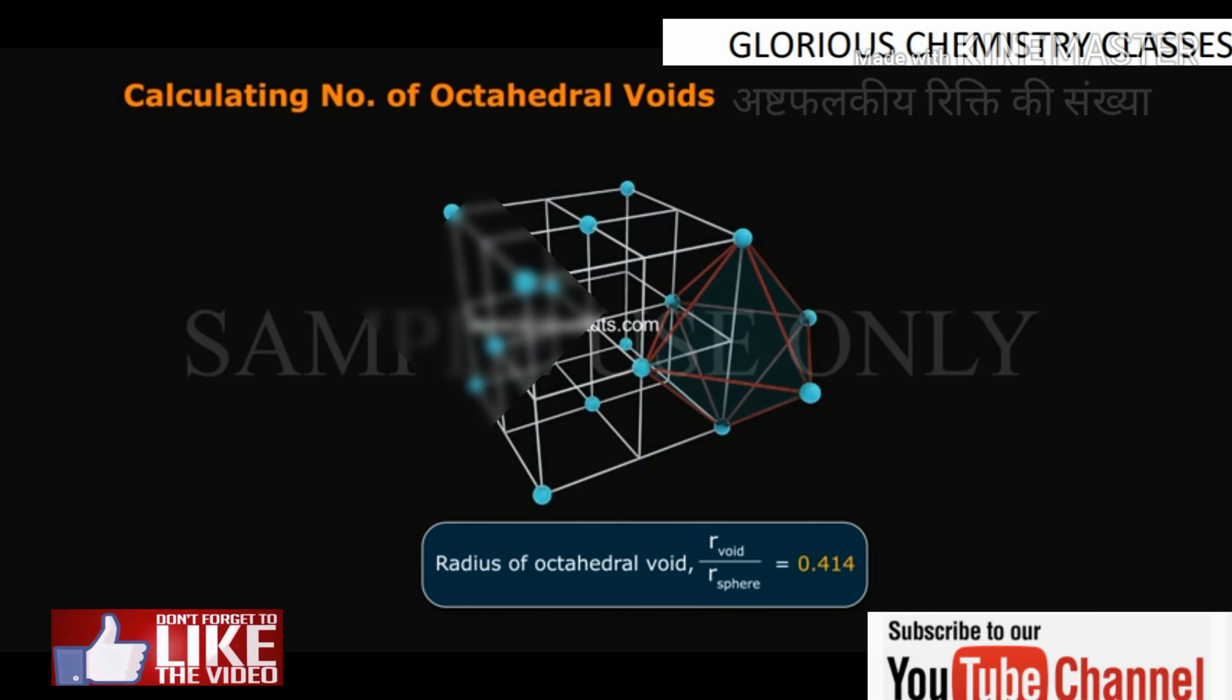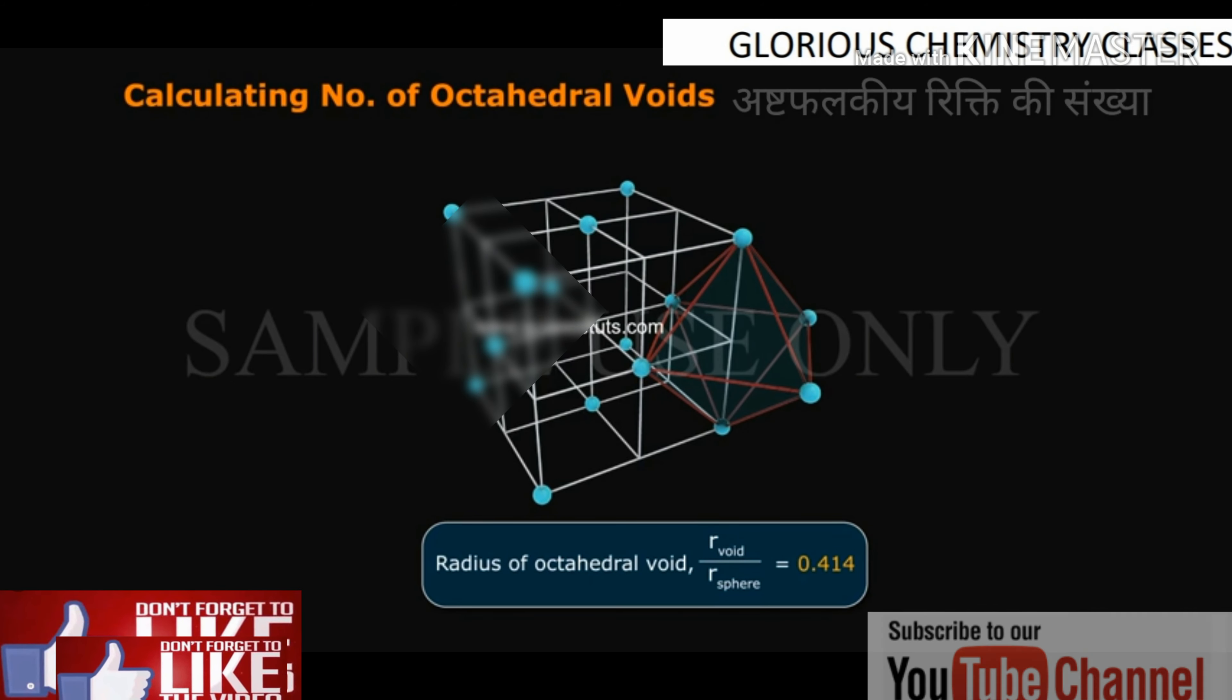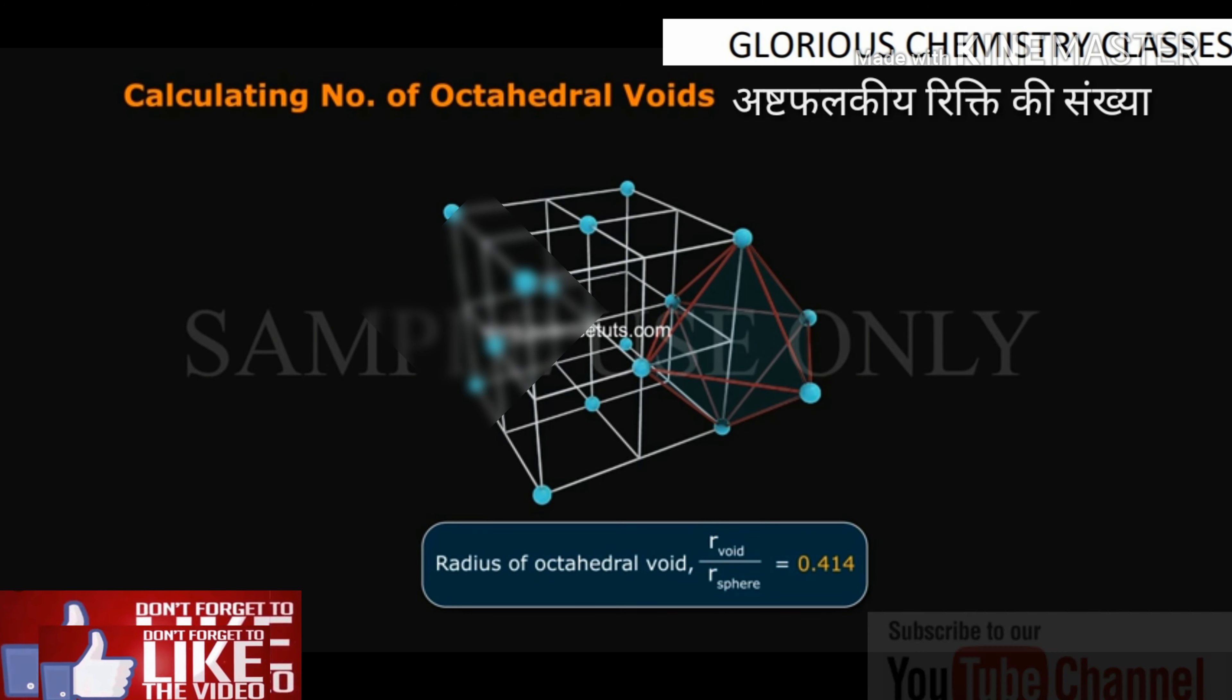Radius of octahedral void: R_void by R_sphere is equal to 0.414.